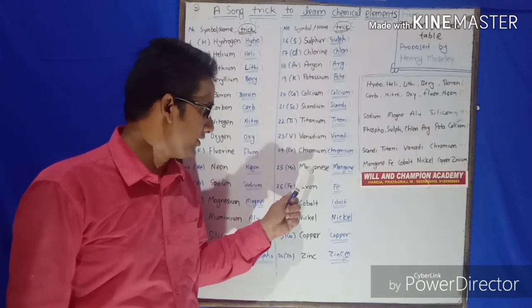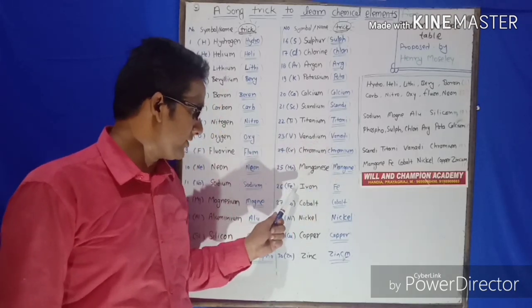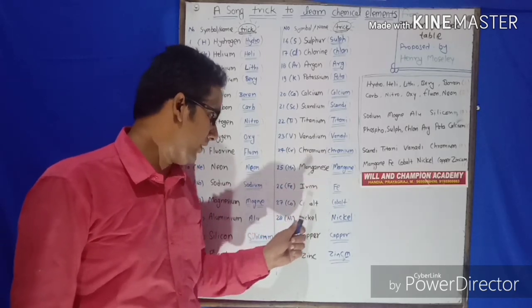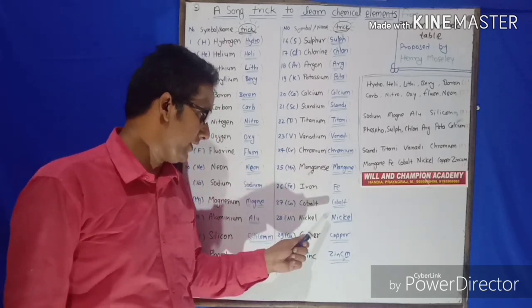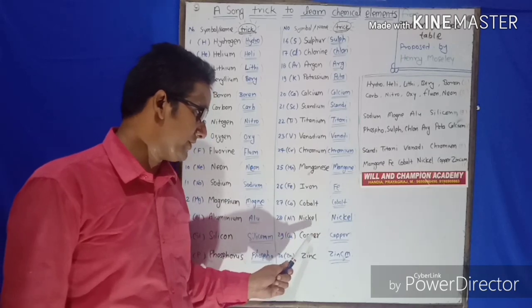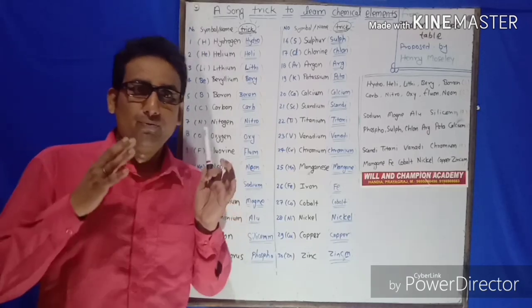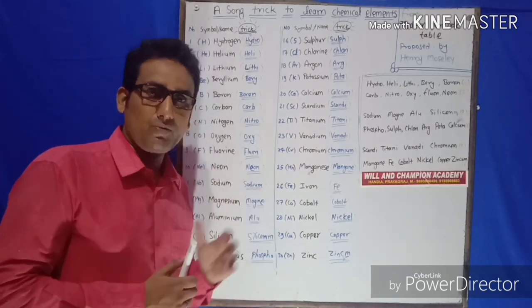Fe stands for Iron, say Fe. Co stands for Cobalt, say Cobalt. Ni stands for Nickel, say Nickel. Cu stands for Copper, say Copper. And Zn stands for Zinc, say Zinc. Before we start singing this song.